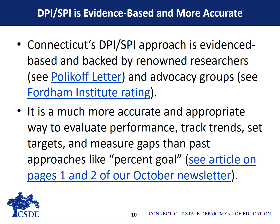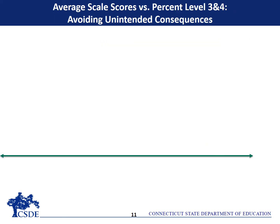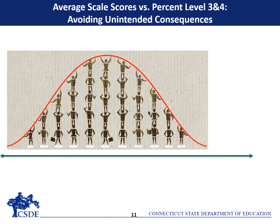But what about the percentage of students at or above level 3? Why doesn't Connecticut use that measure within its accountability system? When we focus solely on the percentage of students above the level 3 cut, districts and schools tend to focus their energies on students just below that cut score at the expense of all other students, including those well below the cut score and those above the cut score.